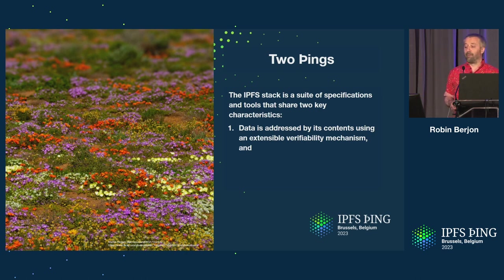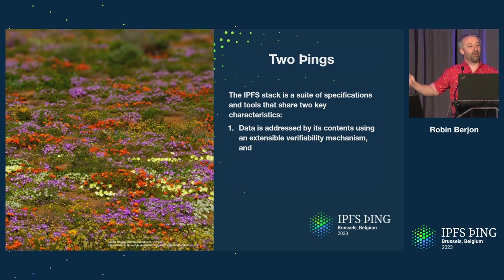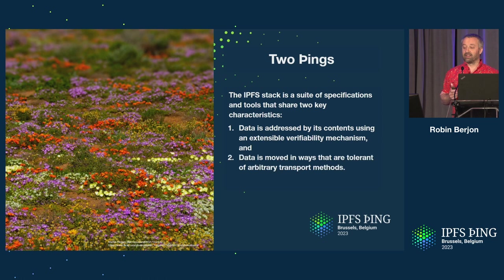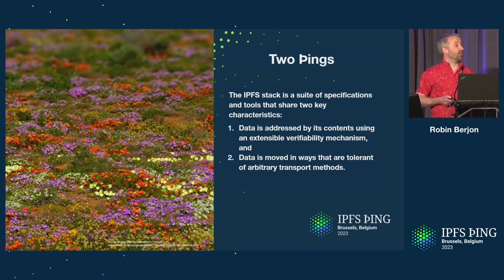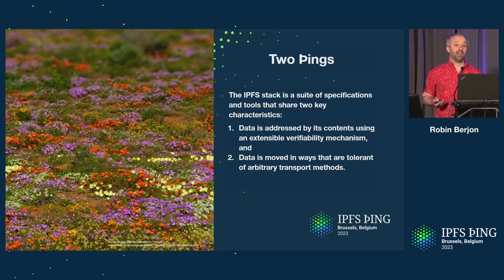If you have basically two primary characteristics, you can have something that's IPFS-like. First, you need content that is content-addressed with verifiability at the endpoints. And second, which is tied to the first, if you have that, then you can use arbitrary transports. That's basically everything you need to guarantee that something can be IPFS-like in principle.